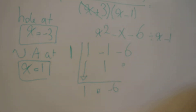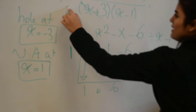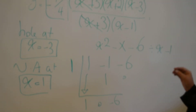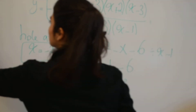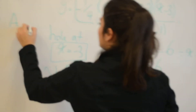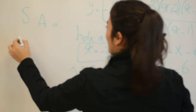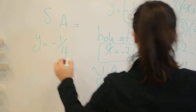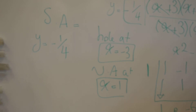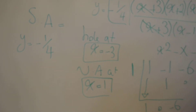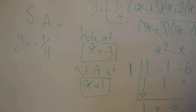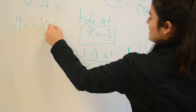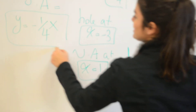Now we need to notice that we have negative 1 over 4, which will affect our slant asymptote. So our slant asymptote will be y equals negative 1 over 4 times x. This is the equation of our slant asymptote.